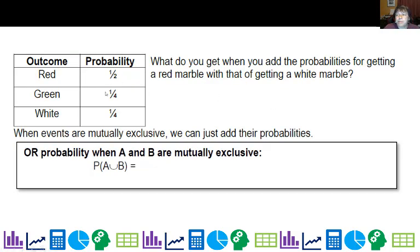What do you get when you add the probabilities for getting a red marble with that of a white marble? Well, one half plus one fourth is three fourths or 75 percent. So that actually worked pretty well just adding the probabilities of the red and the white. So or probability when event A and event B are mutually exclusive is the probability of A plus the probability of B.